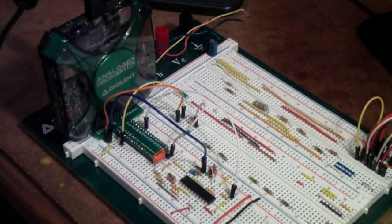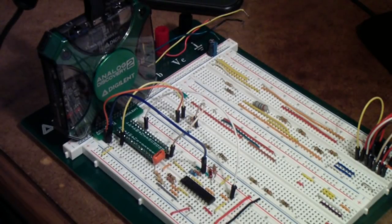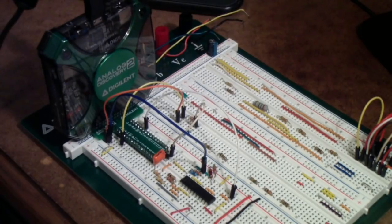Today I'm using the analog discovery to experiment with a linear technologies LTC 1060. What that is is it's called a universal dual filter building block, but basically it's a switched capacitor filter that contains two separate filter elements and of course they can be connected together.